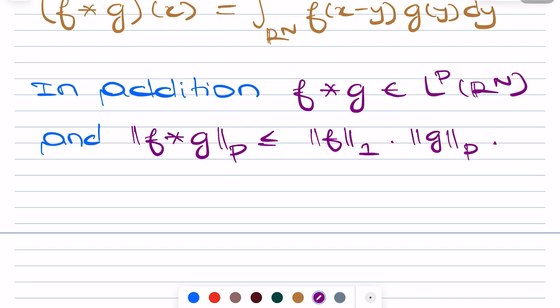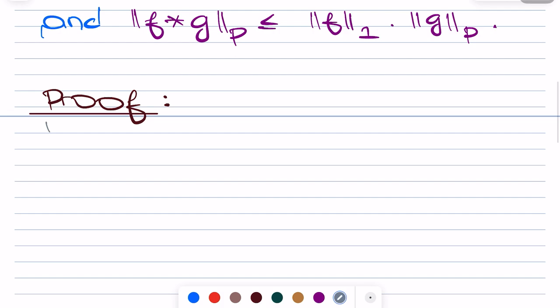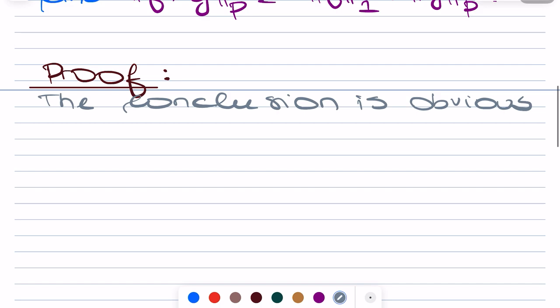Let's have a look at the proof. We are going to proceed by case distinction. The conclusion is obvious for the case p equals plus infinity, so we only consider two cases: Case 1 where p equals 1, and Case 2 where p is strictly between 1 and infinity.